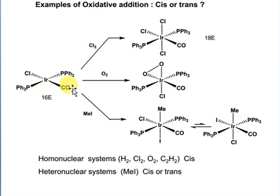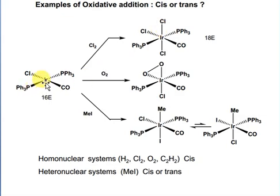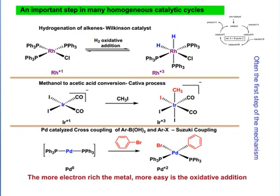Here you can see the complex is coordinatively unsaturated — coordination number is 4 before addition, and becomes 6 after. Oxidation state goes from +1 to +3. This is a 16-electron complex which becomes an 18-electron complex after oxidative addition.